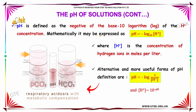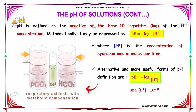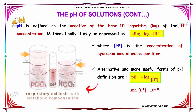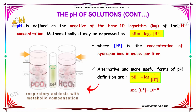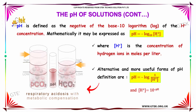pH is defined as the negative log of base 10 of the H+ concentration. Mathematically, it can be represented as pH equal to minus log of H+ ion concentration to the base 10, where H+ is the concentration of hydrogen ions in moles per liter.